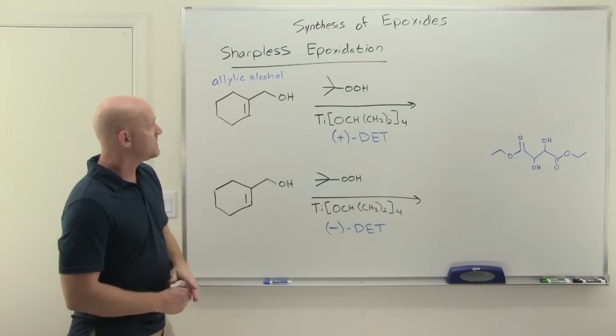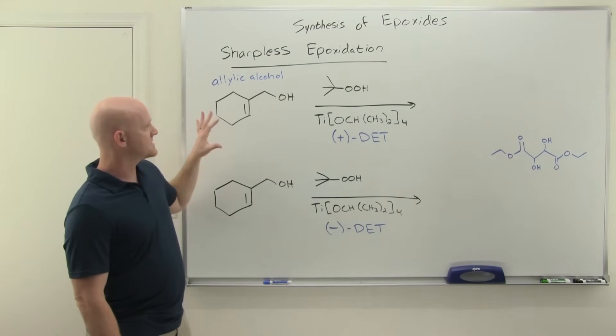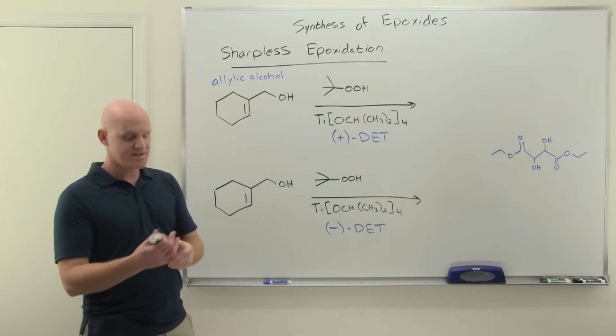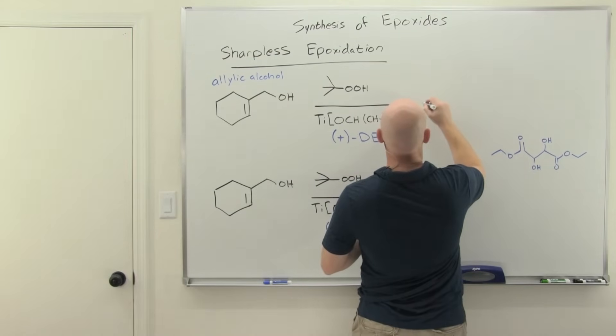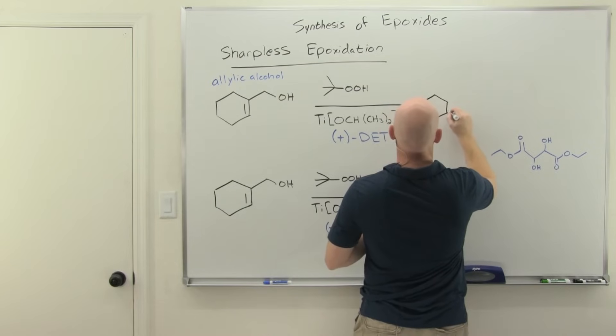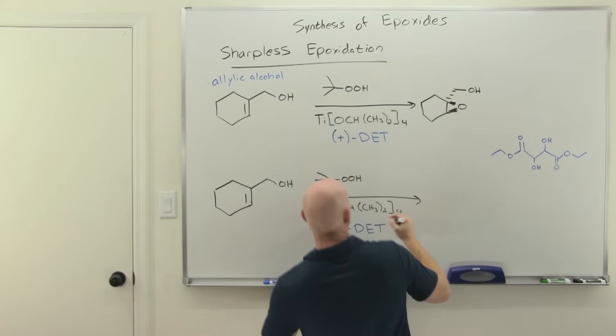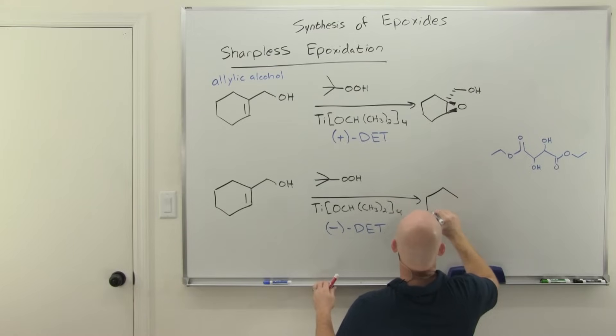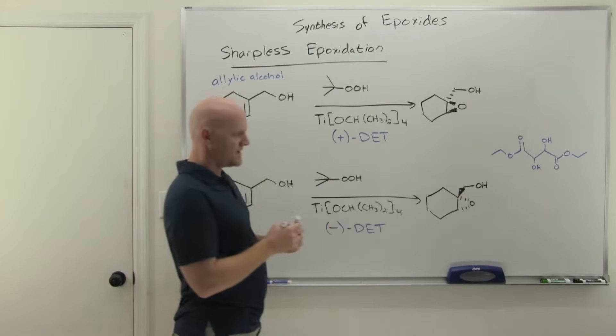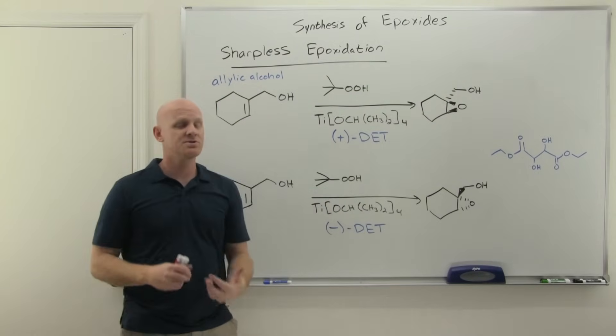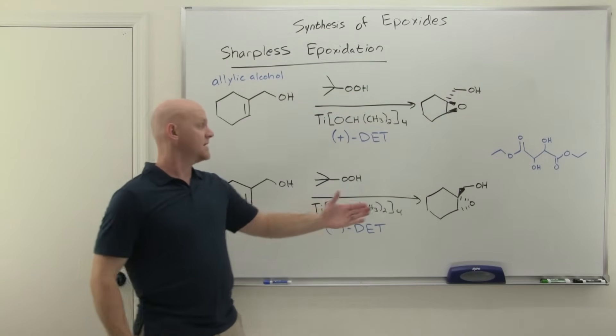And the Sharpless Epoxidation is really nifty, because in this case, we can form a couple of different enantiomers here. So let's take a look here. We get this guy, and then the allylic alcohol part over here. So it turns out the enantiomer with the allylic alcohol now on the wedge, and so these two epoxides are enantiomers. And normally, if you just use MCPBA or something like that, you get both.